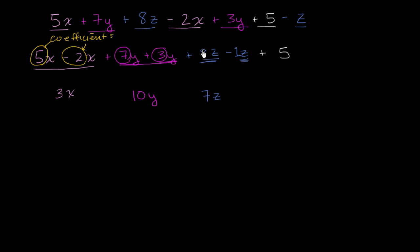And then you could see you definitely did add the two coefficients, the 8 and the negative 1. But once again, common sense tells you if you have 8 of something and you take away one of them, you have 7 of that something. And then finally, you have plus 5.